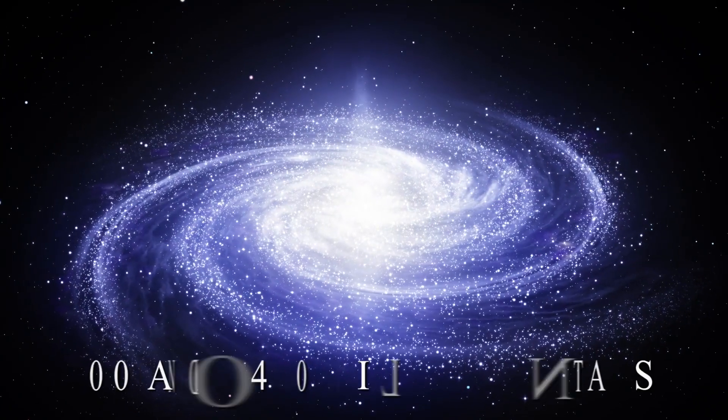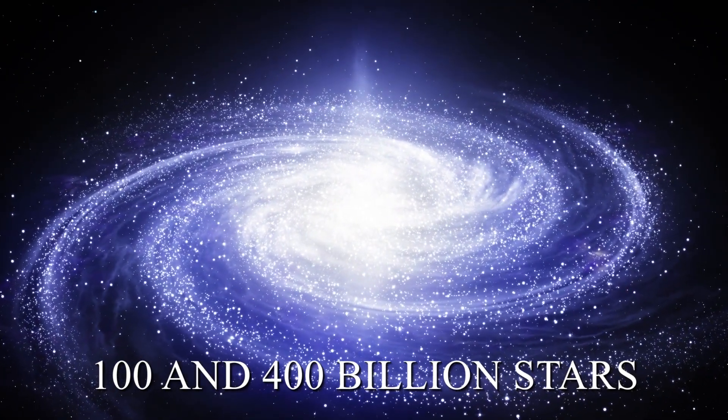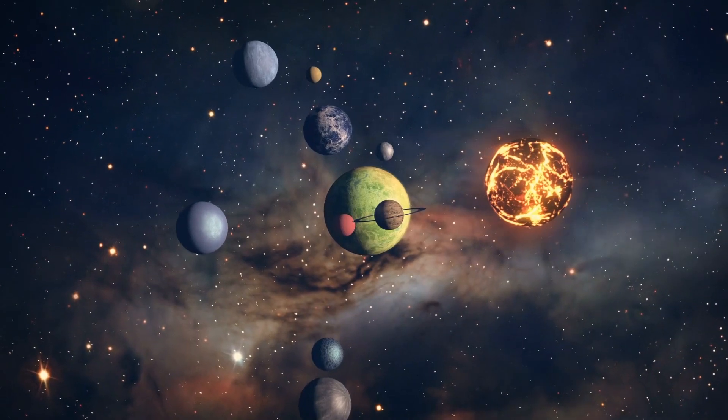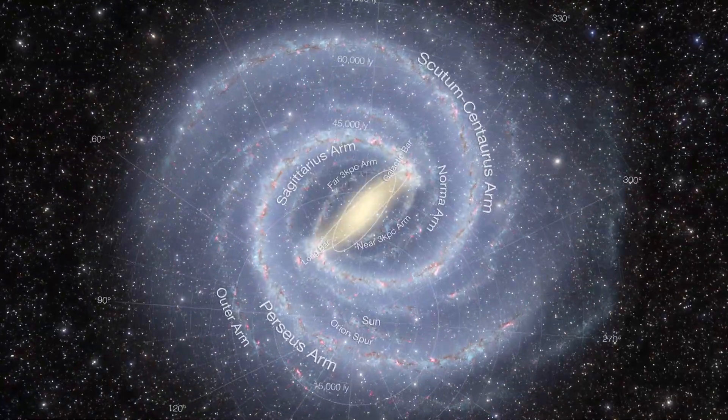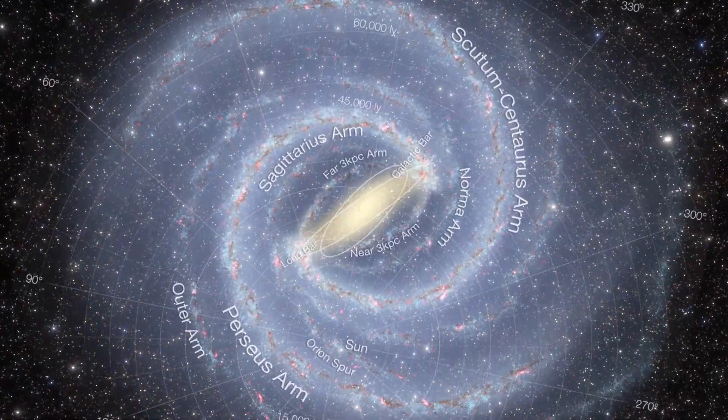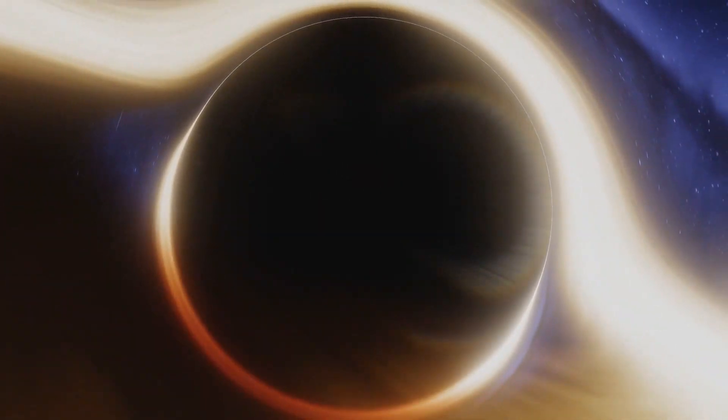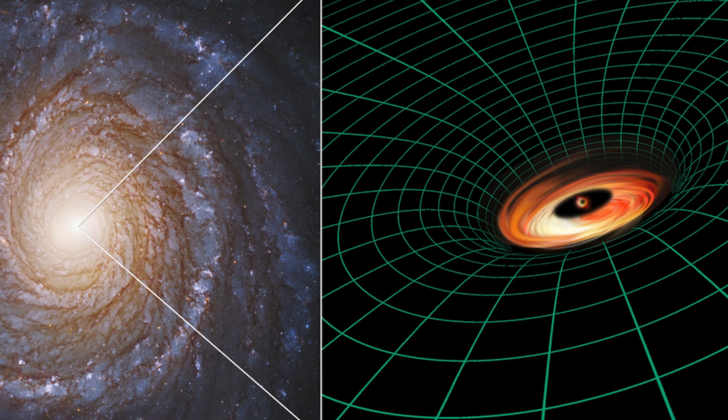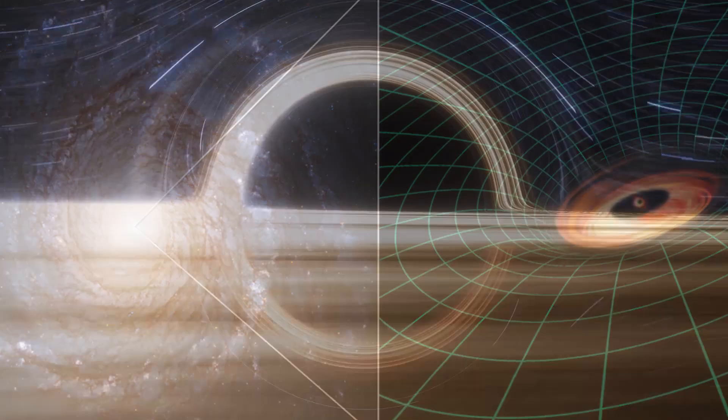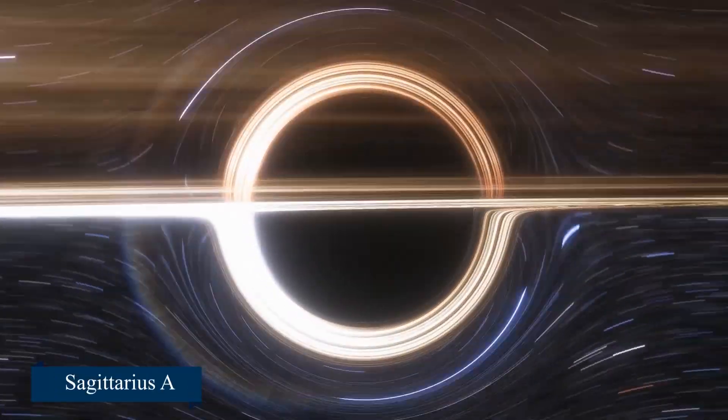The Milky Way is made up of between 100 and 400 billion stars, in addition to at least that many planets. Our solar system can be found around 27,000 light years from the galactic center on Orion's arm in a spiral-shaped concentration of gas and dust. A supermassive black hole with a mass of around 4.1 million solar masses sits at the heart of the Milky Way, where a powerful radio transmitter is known as Sagittarius A.